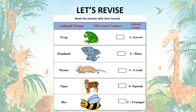Before learning something new, let us revise what we have learnt in part 2. Here I have given you 5 animals and their sound is given in another column. You have to write the correct number. For example, the first picture is of Frog. Can you see where its sound is given? Number 3, that is Croak. You can simply match it, or you can write the name of the animal and the sound in your notebook and do it in the form of matching.